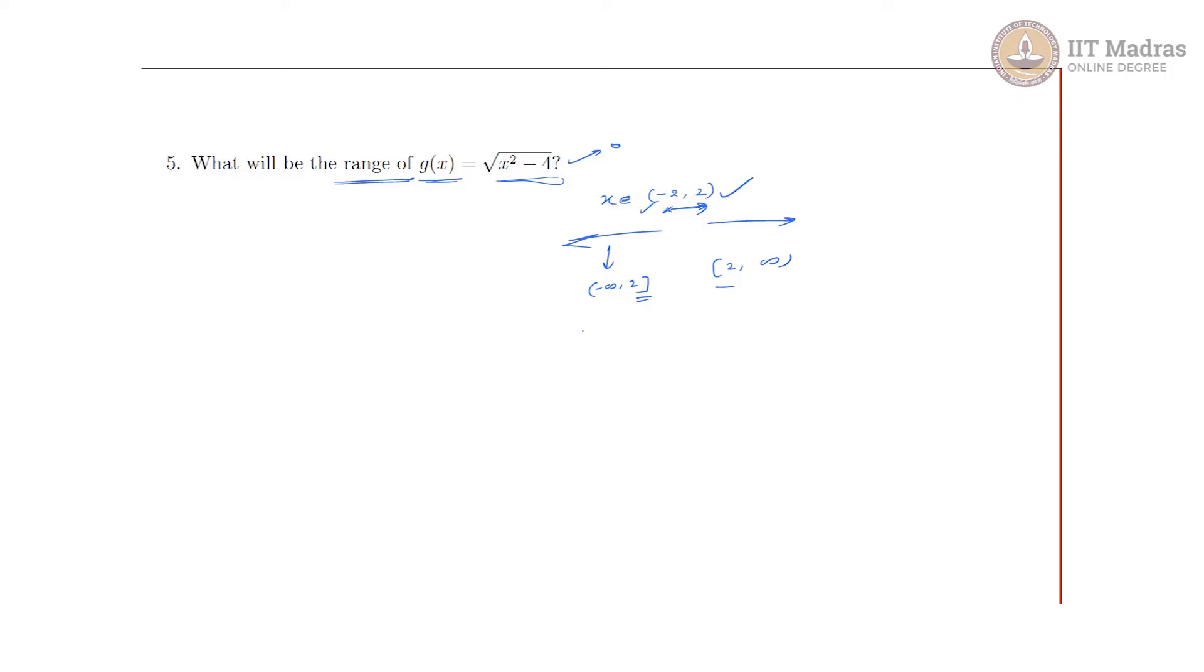Now if we find where the function is defined only, I will try to draw a graph, a hypothetical graph which is a rough diagram. So at 2 this will give 0 and minus 2, this will give 0.